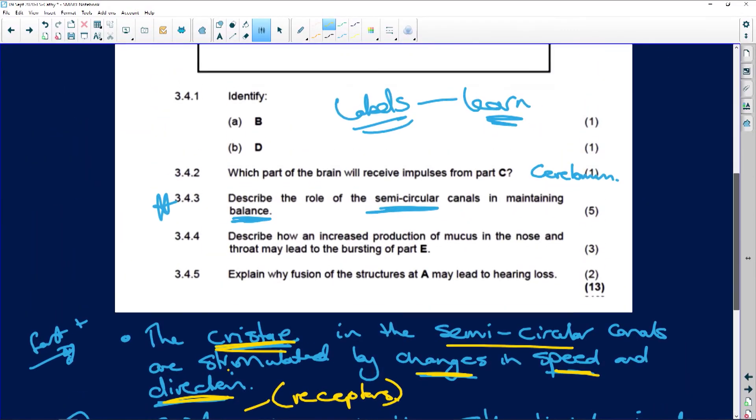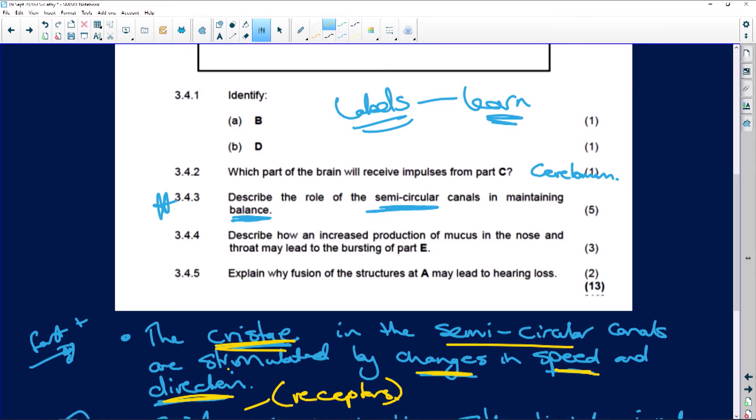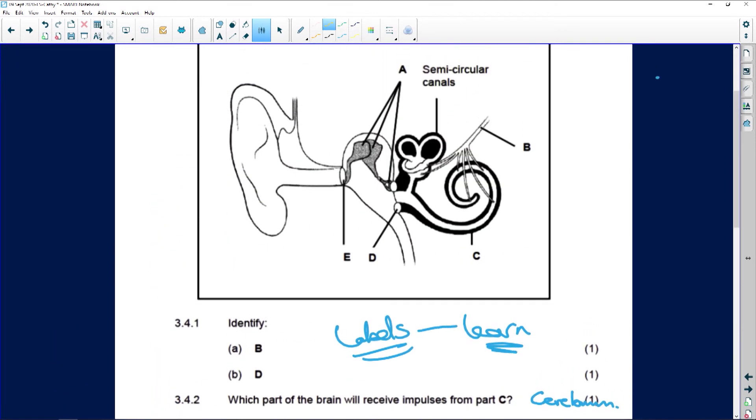Very important. Okay, let's see what the other questions were. Describe how an increased production of mucus in the nose and throat may lead to a bursting ear drum. I'm going to quickly show you - this here is your eustachian tube.